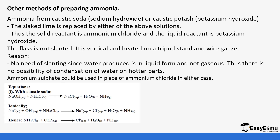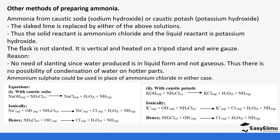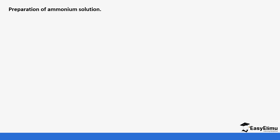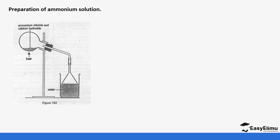Ammonium sulfate can also be used in place of ammonium chloride, since it is still the reaction of an ammonium salt with a base. When sodium hydroxide reacts with ammonium chloride, sodium chloride, water, and ammonia are formed. Similarly, potassium hydroxide reacting with ammonium chloride forms potassium chloride, water, and ammonia, as shown in the ionic equations.